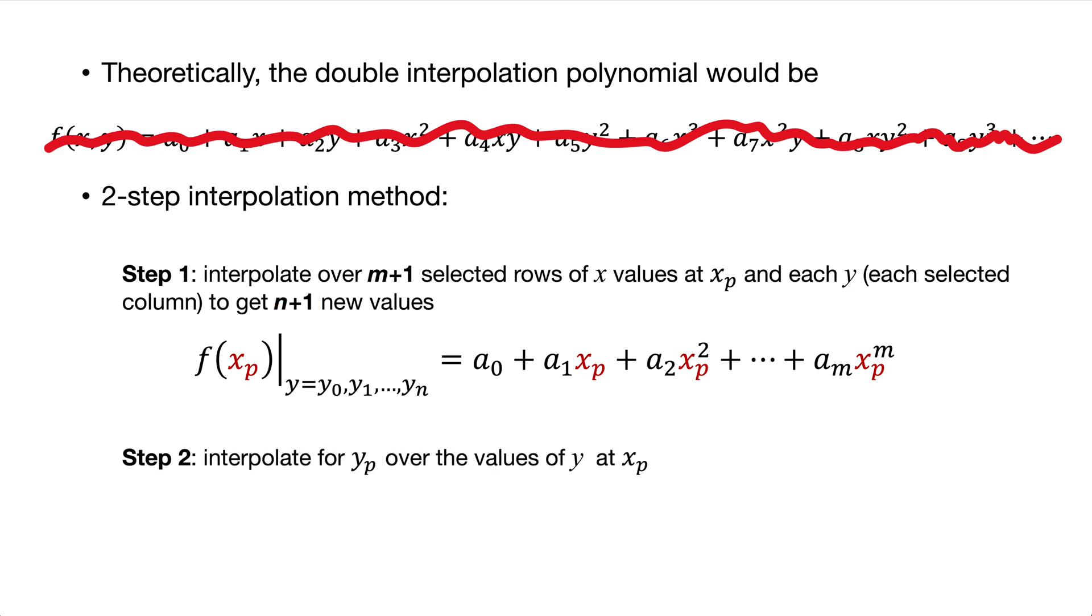In step two, we perform only one interpolation over the new row at x equals xp, resulting from step one, and that by substituting yp. As you've noticed here, n has become the degree of this polynomial.